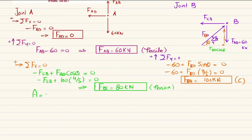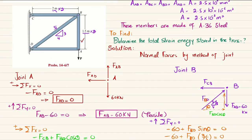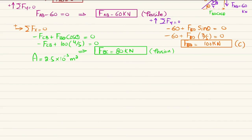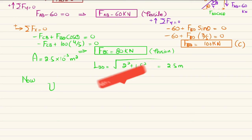Now we have all the member forces. The cross-sectional area is 2.5 × 10⁻³ m². The lengths are: BC = 2 m, BA = 1.5 m. The length of BD is calculated using the Pythagorean theorem: √(2² + 1.5²) = 2.5 meters.